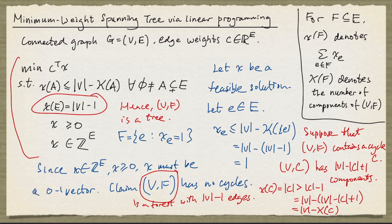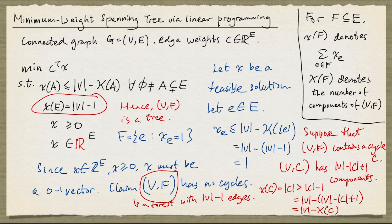In summary, we have an integer linear programming formulation for the minimum weight spanning tree problem. Since this is an integer linear programming problem, we can relax it by dropping the integrality requirement. The linear programming relaxation turns out to solve the minimum weight spanning tree problem exactly, in the sense that it has an optimal solution that is the incidence vector of a spanning tree. We're going to take a closer look at this relaxation in the next video.